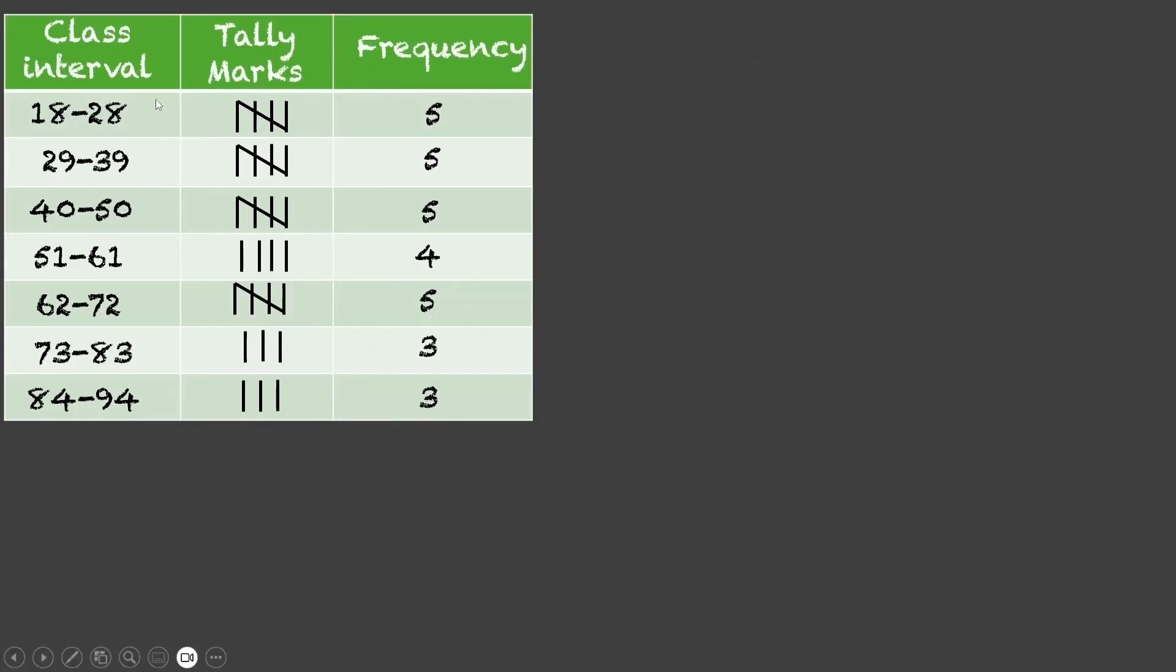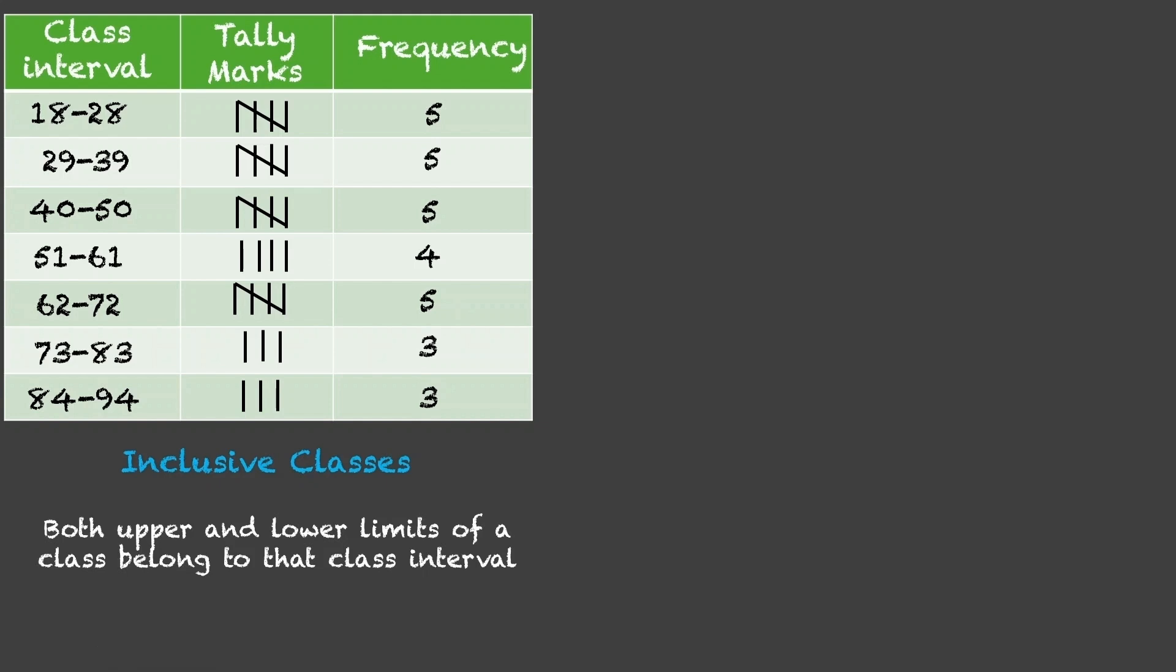We will notice that the classes over here are non-overlapping. No number is repeating in two classes. Such classes are called inclusive classes. Here, both lower and upper limits of a class belong to that class interval. Which means, if we have an observation which is 18, it will belong to this class. And if we have any observation in our data set which is 28, it will belong to this class interval only. But, the catch is, what if we have a data value like 28.5? In which class interval we will include it? This one or this one?